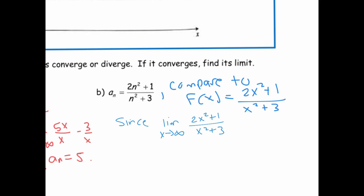In the long run, that plus 1 is not really important and the plus 3 is not as well. This is equal to the limit as x goes to infinity of 2x²/x², which we can see is equal to 2. That just means that this is equal to 2 as well.